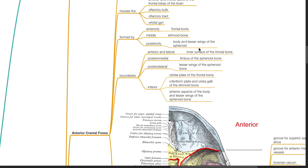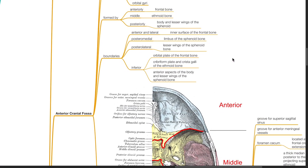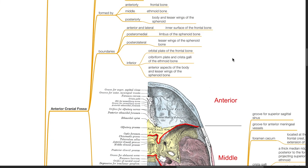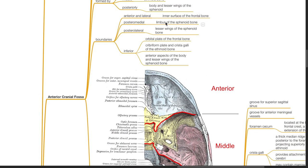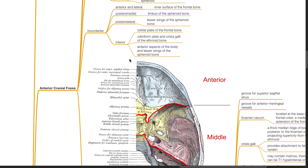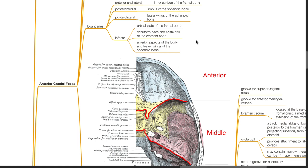The anterior cranial fossa is formed anteriorly by the frontal bone, in the middle by the ethmoid bone, and posteriorly by the body and lesser wings of the sphenoid. Anterior and lateral boundaries are formed by the inner surface of the frontal bone. Postero-medial boundary is formed by the limbus of the sphenoid bone. Postero-lateral boundary is formed by the lesser wings of the sphenoid. Inferior boundary is formed by the orbital plate of the frontal bone, cribriform plate and crista galli of the ethmoid, and anterior aspect of the body and lesser wings of the sphenoid bone.